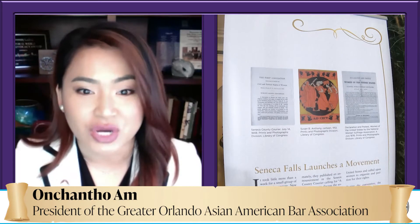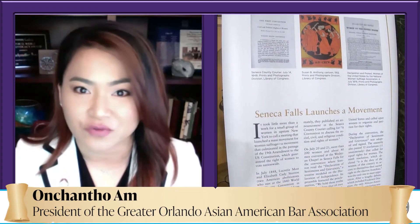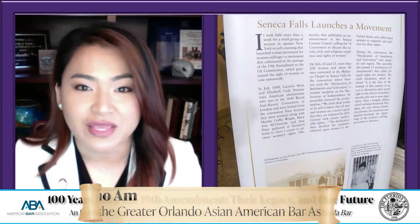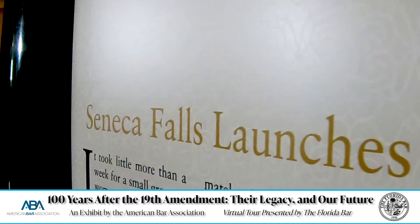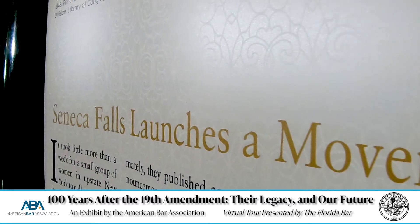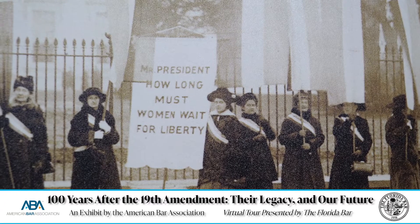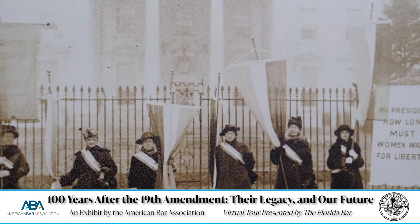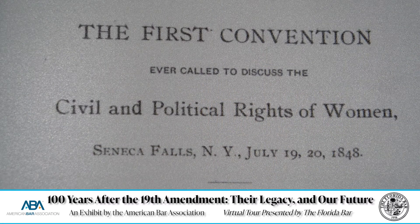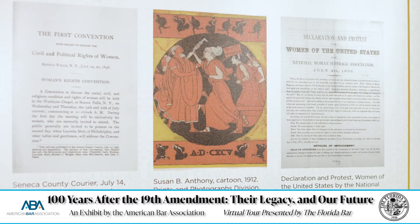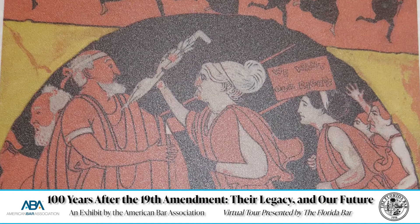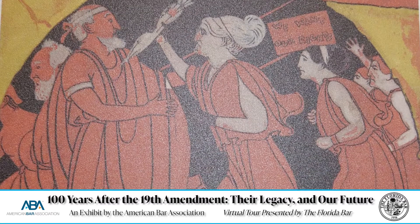The Seneca Falls Convention, held in 1848, is known as the meeting that launched the women's suffrage movement in America. Suffragists including Lucretia Mott and Elizabeth Cady Stanton convened a meeting of more than 200 women and 40 men in Seneca Falls, New York. Stanton read the Declaration of Sentiments and Grievances, which detailed the injustices inflicted upon women in the United States and called upon women to organize and petition for their rights. The declaration was adopted and signed, along with 12 resolutions that called for equal rights for women.